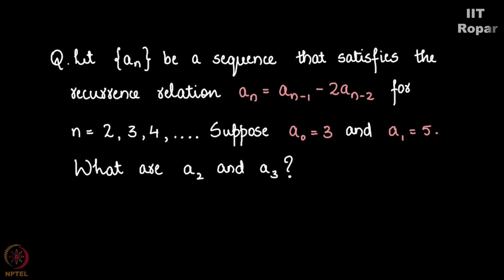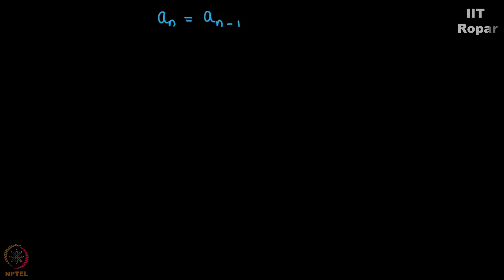The recurrence relation is given to us with A0 = 3 and A1 = 5. We have to find out the terms A2 and A3. Let me start with A2. How do we obtain A2?